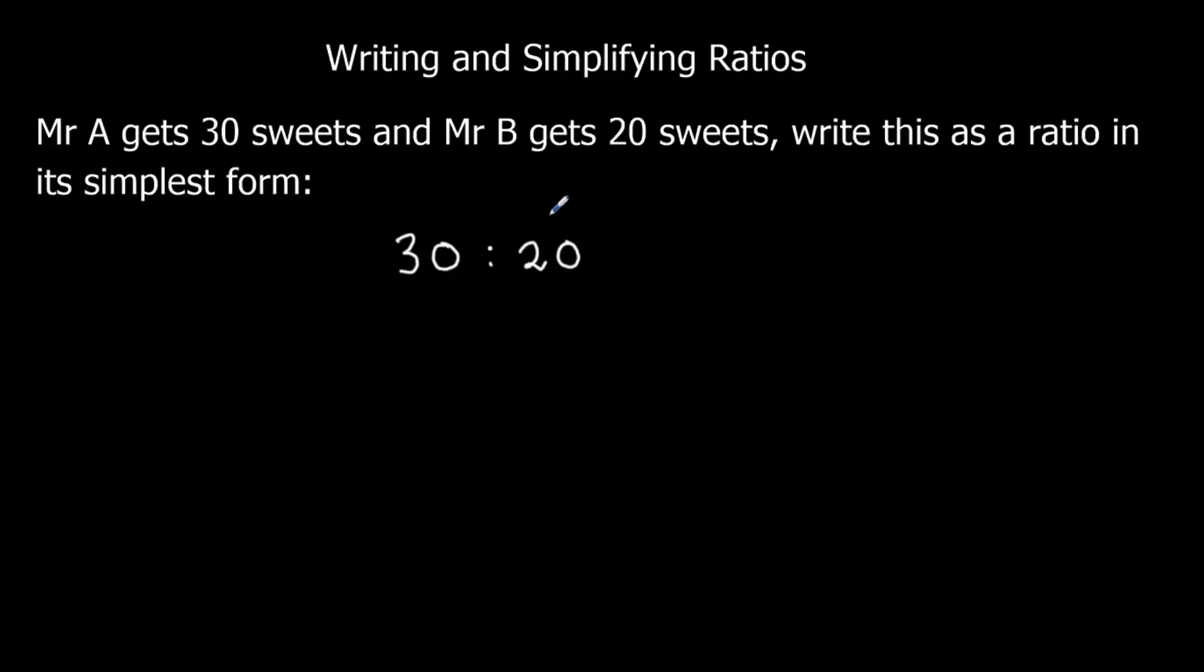When we're simplifying ratios, it's the same as simplifying fractions. We're just looking for which times table both of these are in. So 30 and 20 are both in the 10 times table. So it's 3 tens and 2 tens. So the ratio of sweets is 3 to 2.